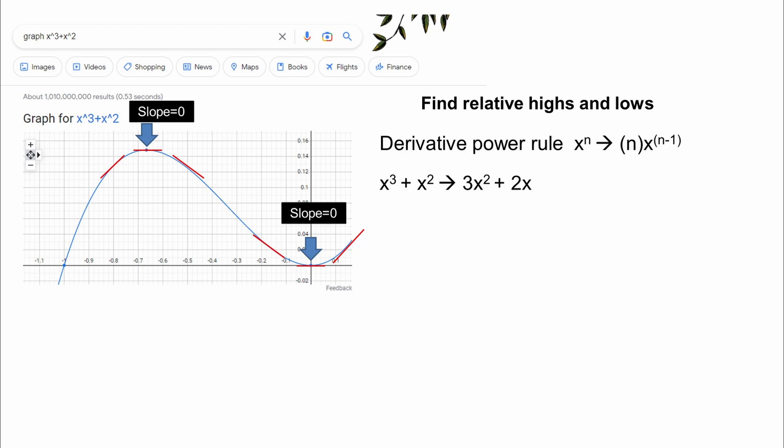Using the derivative power rule, which basically is multiplying times the power, then reducing the power by one, we get a derivative or slope of the line equation of three x to the second power plus two x.